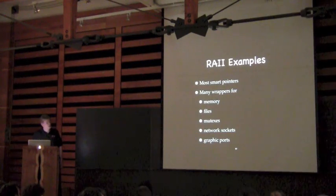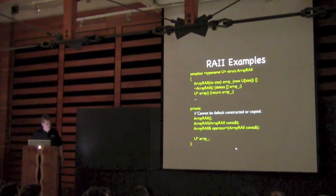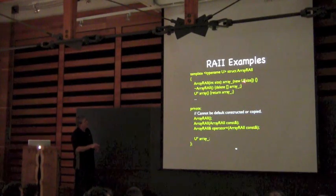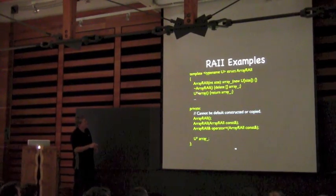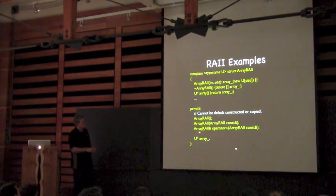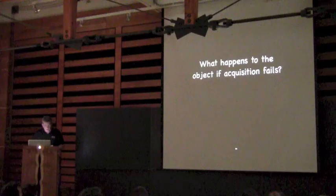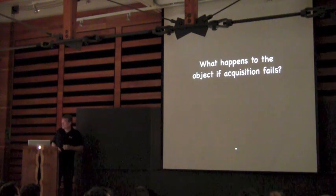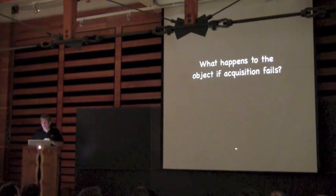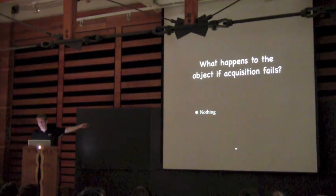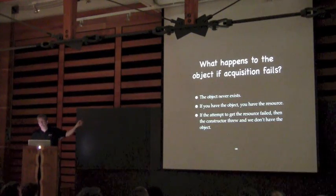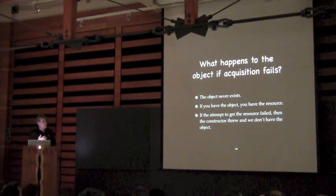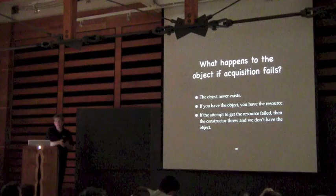There are all sorts of RAII objects in the standard. The only thing you need to know is that inside the constructor we're getting some kind of resource, and then in the destructor we clean up. So here's my question: what happens to the object if acquisition fails? Its lifetime will never begin. If you throw and you don't have the acquisition, then the object's lifetime didn't begin. We have converted a runtime error of not being able to get an object into an exception.